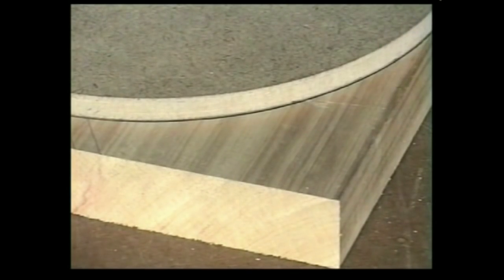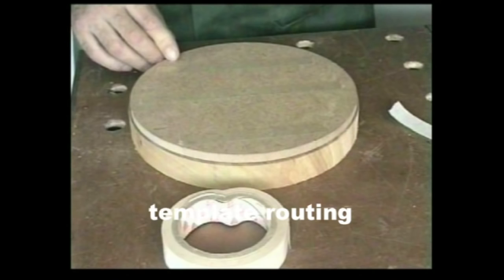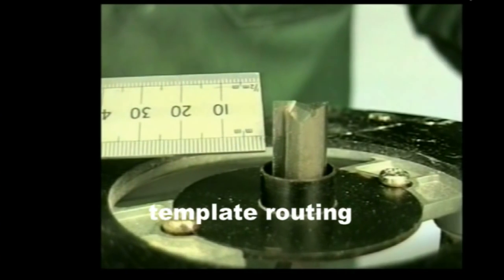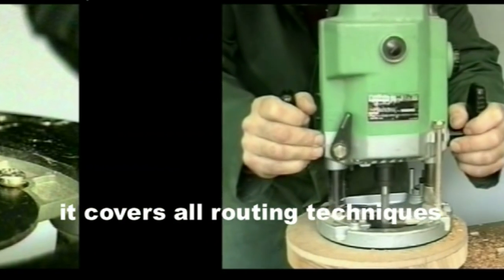After the blank has been band sawn, you simply attach the template to it with double-sided tape. You can see that there is a gap of just over two millimeter between cutter and guide bush collar, which represents the amount the template has to be cut over size.